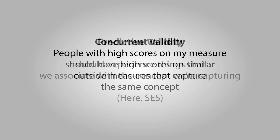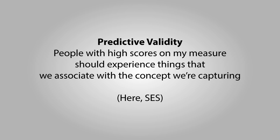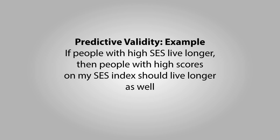Another type of criterion validity is predictive validity. People who score high on my SES scale should experience the same consequences that are known to follow high SES — they should benefit from what people with high SES tend to benefit from. For example, if we know that people with higher SES live longer, then people who score high on my socioeconomic status scale should have longer lifespans.